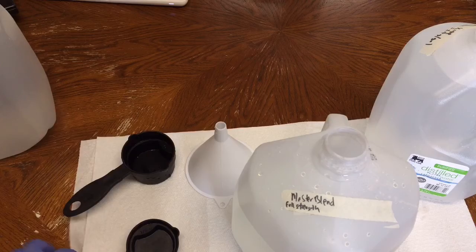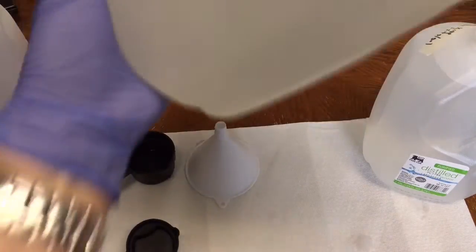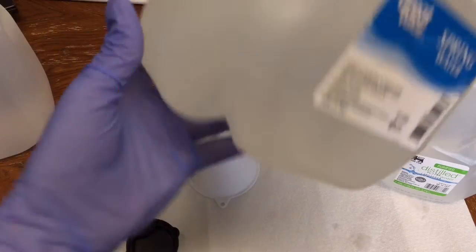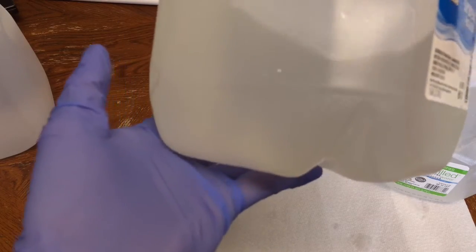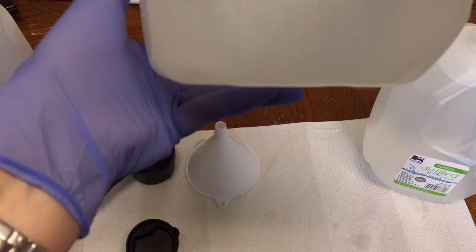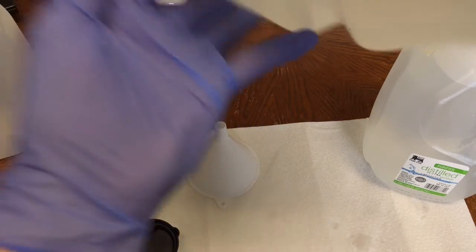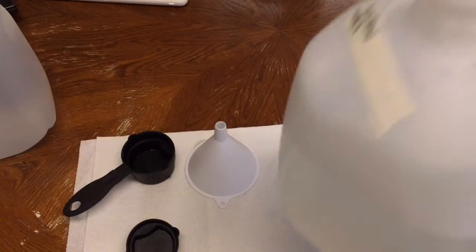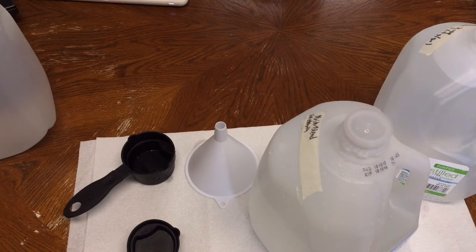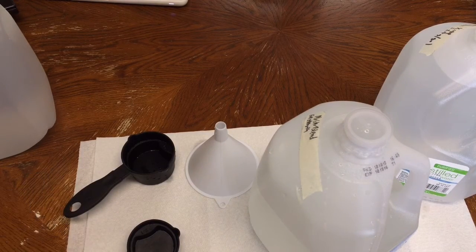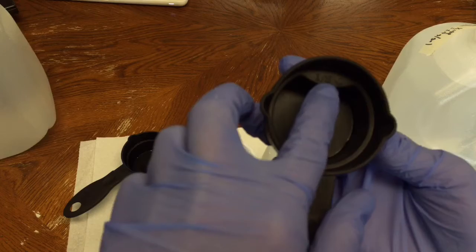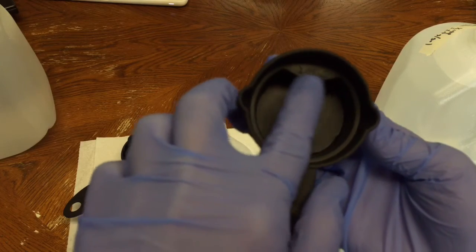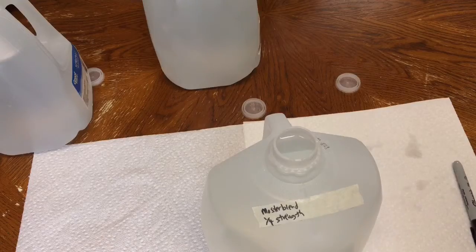Let's see if that dissolved. So far there's nothing precipitating out, looks like it's mixed fine. So I'll go ahead and top this off with water. And I'll do my half strength and quarter strength. For the half strength I'm going to use this quarter cup, and then halfway there as I'm working here for an eighth of a cup. So I'll use that for the quarter strength. This is the quarter strength.